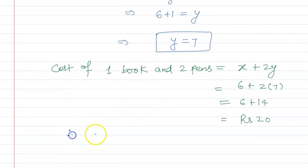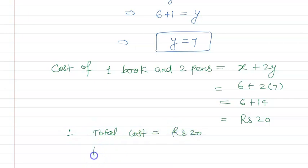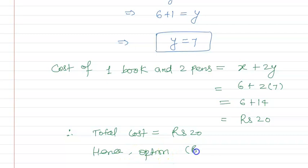Therefore, total cost is rupees 20. Hence, option B is correct. I hope you have understood that question. Thank you.